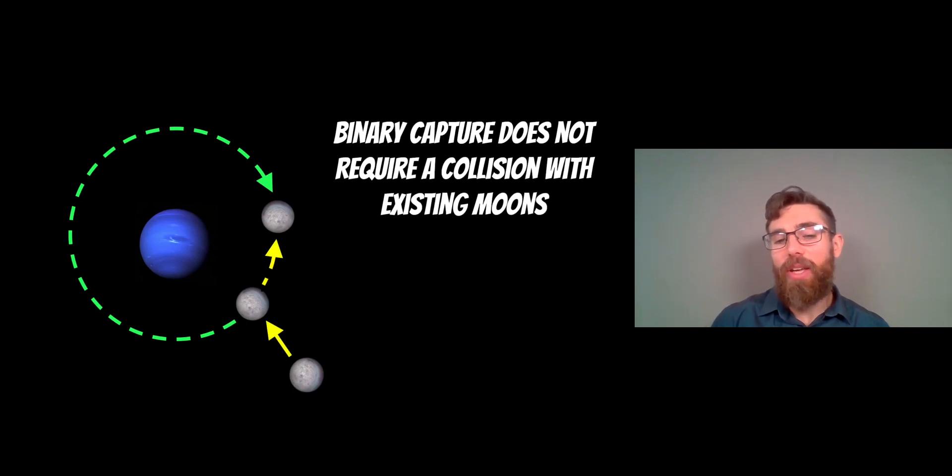So the only way you can really get the single capture of a Triton-like object onto its current orbit is if it had a collision with an existing moon, which is quite a violent process. We don't really think that's likely to occur. So it's a less likely scenario. But you need to have a collision with an existing moon to get the system that we have now.